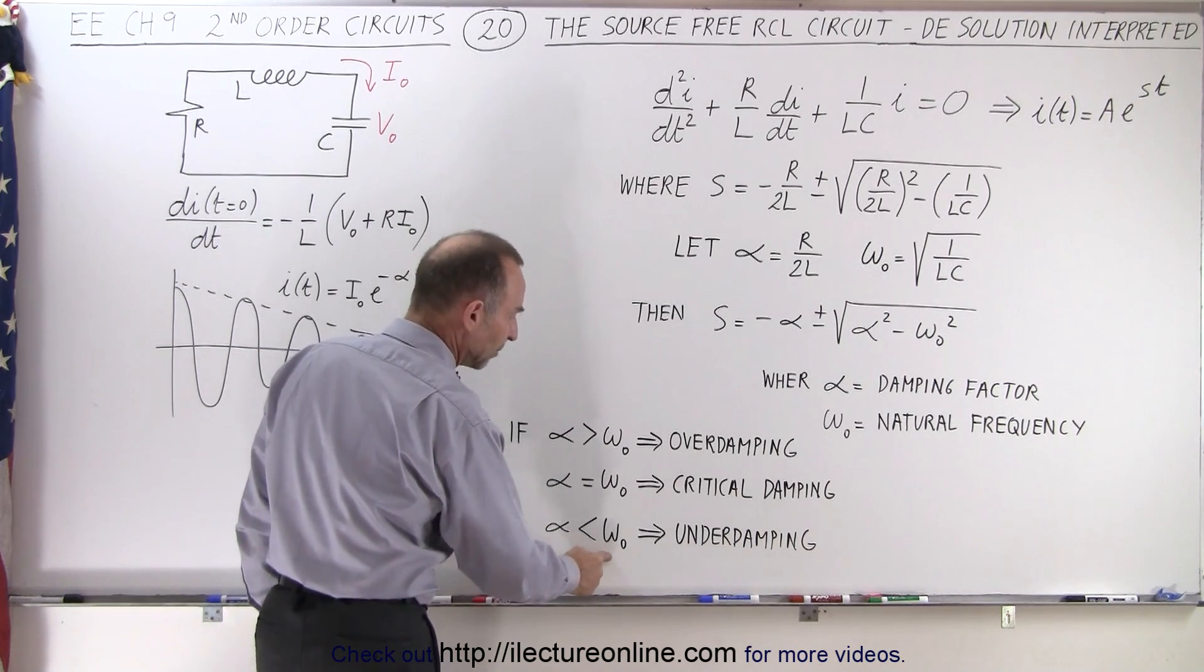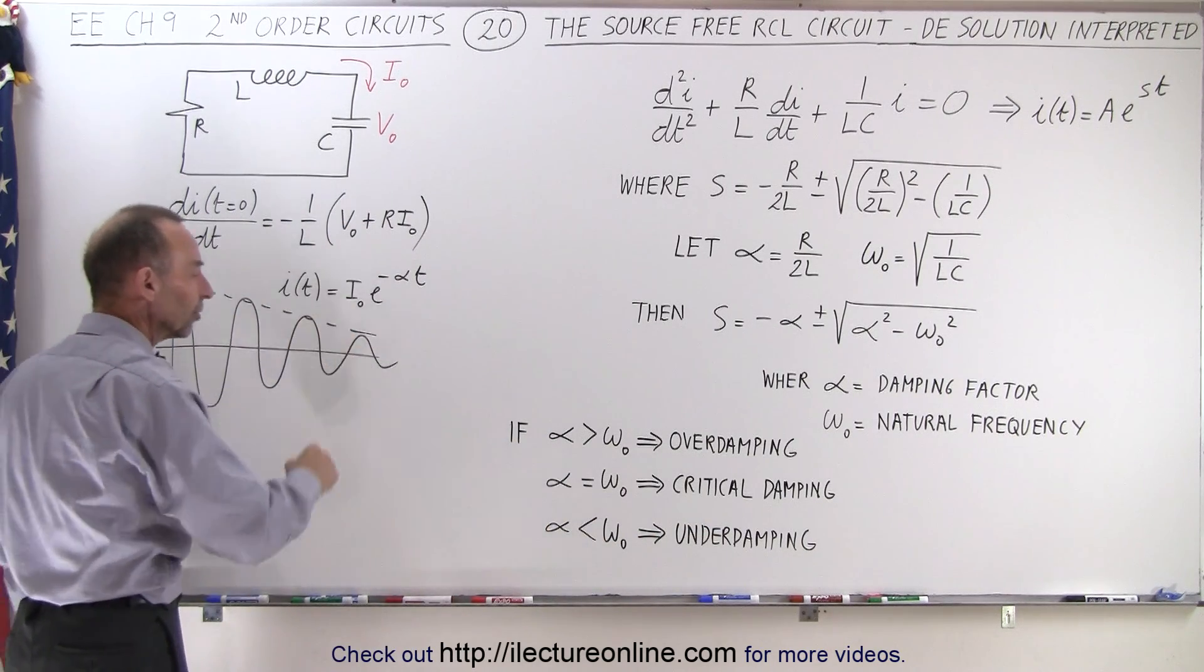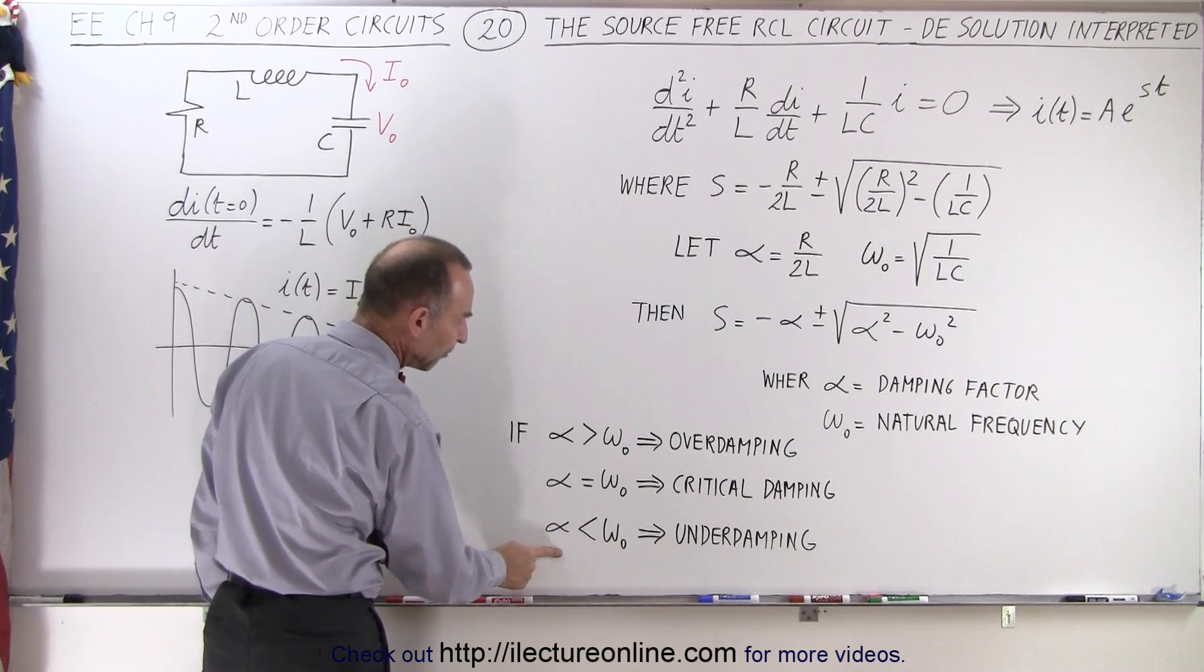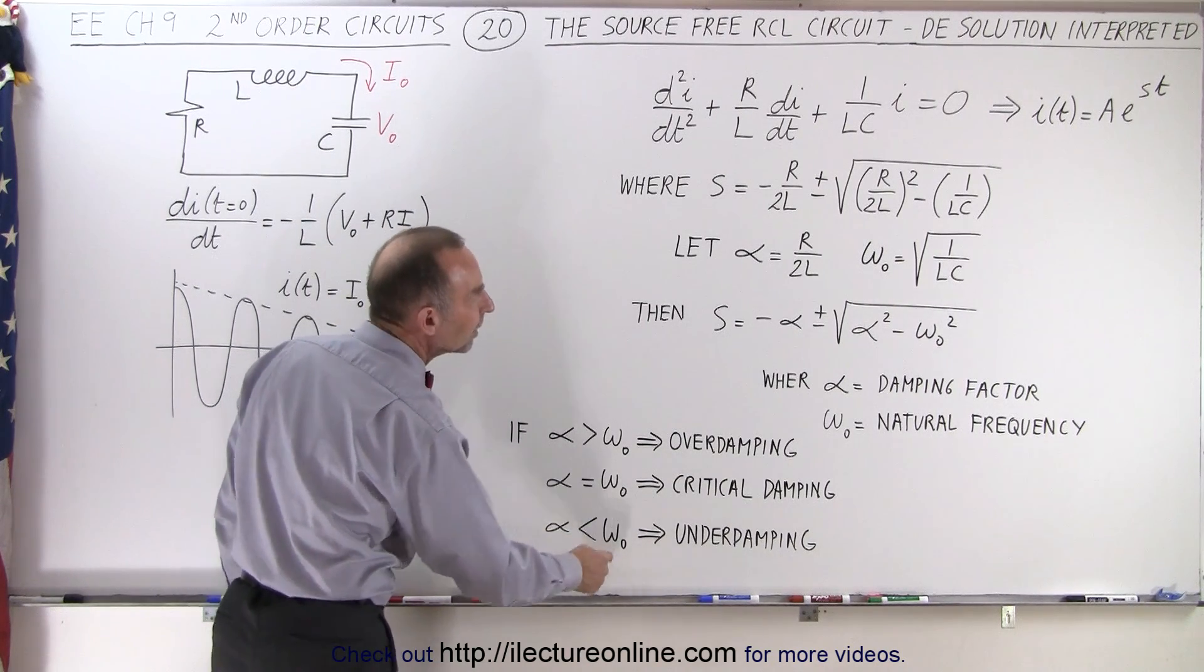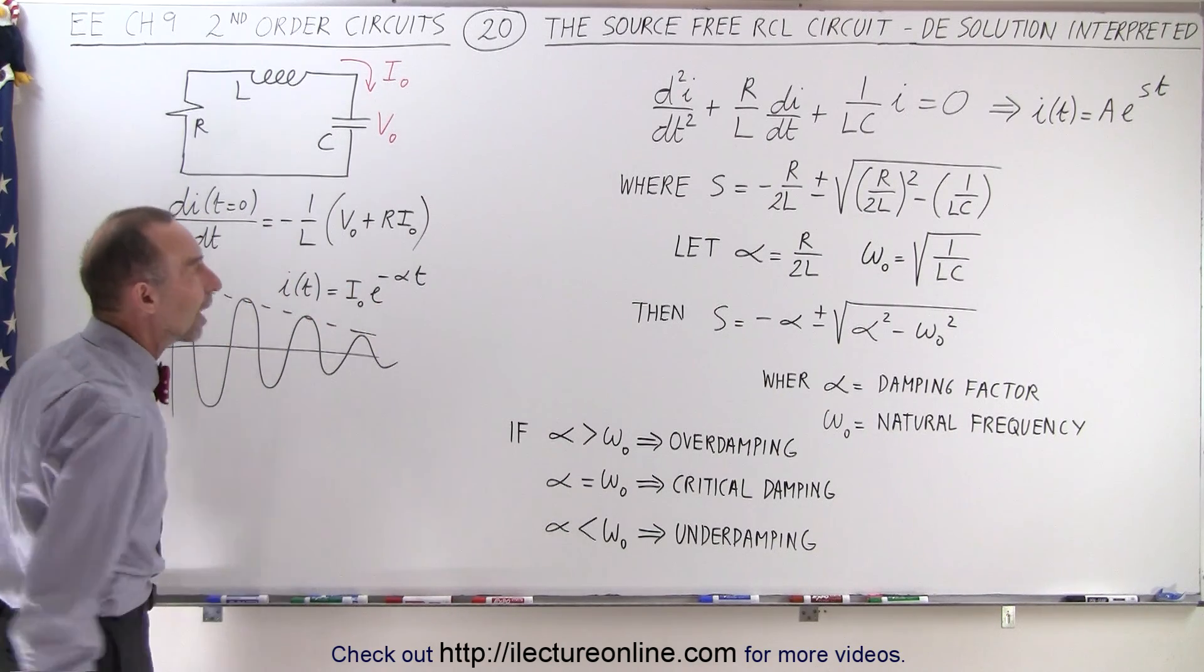And finally, alpha is smaller than omega means we're under-damped, and then you have a situation that looks a lot more like this. So this would be the situation where alpha, the damping factor, is smaller than omega, the natural frequency, and then we have a bunch of oscillations before it slowly comes to a stop.